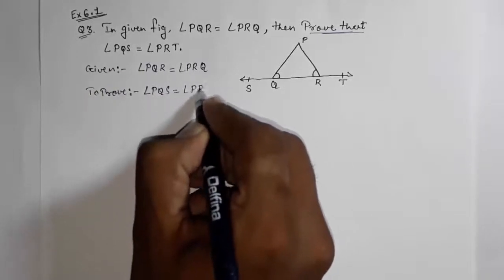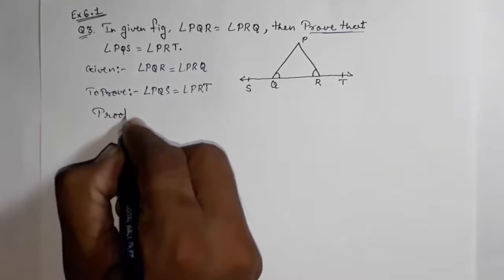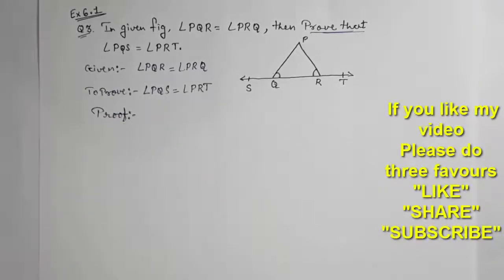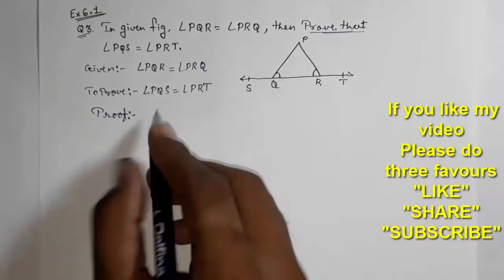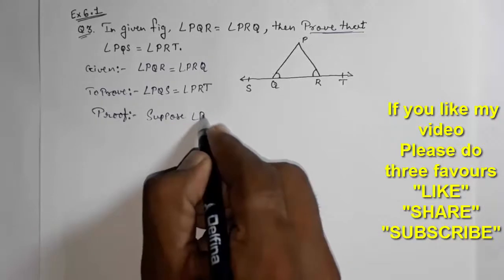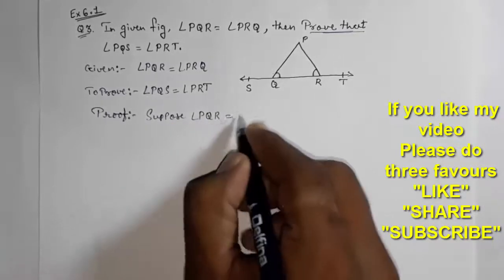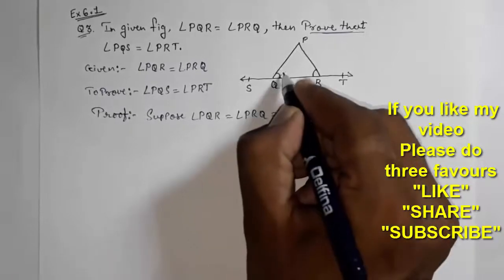Now moving towards proof. How can we prove it? Look, it's so simple. They said the interior angles are equal. So first of all, suppose angle PQR is equal to angle PRQ is equal to x. Suppose these two are equal, so suppose it is x, so this will also be x.